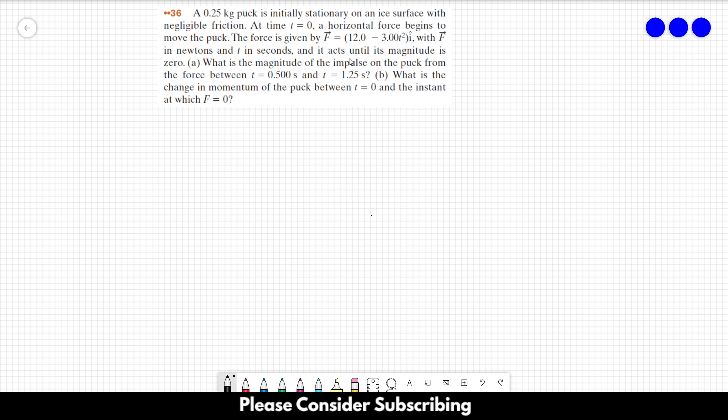The first thing we have to do is check when the force is 0, because when the force is 0, it stops. If it stops before 1.25 seconds, letter a would be different. Let's write it down. It's really easy to see. F is equal to 12 minus 3 times t squared in the i direction. As you can see, this should be 0.